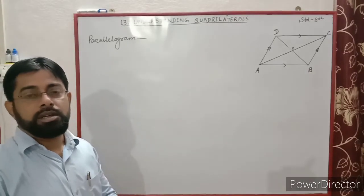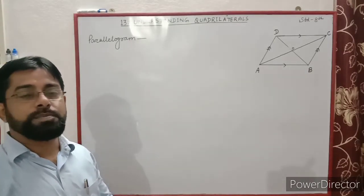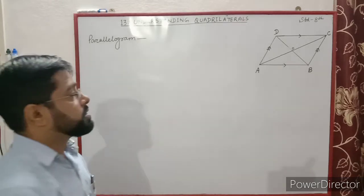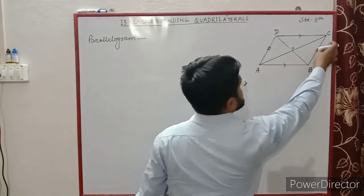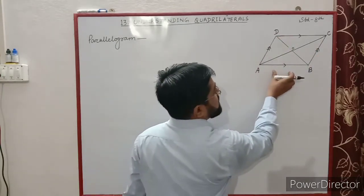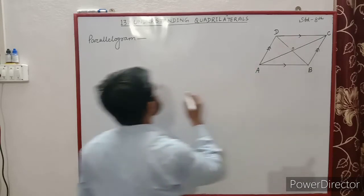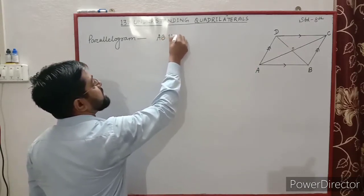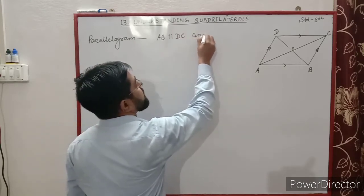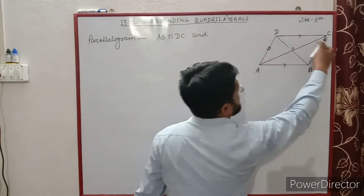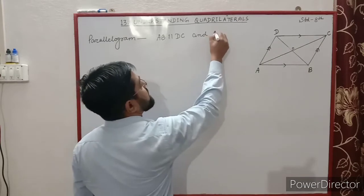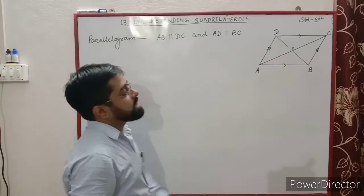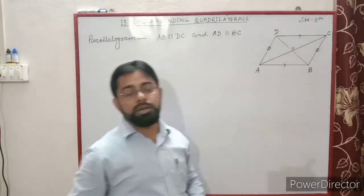Parallelogram. A quadrilateral in which both pairs of opposite sides are parallel is called a parallelogram. From the figure, ABCD is a parallelogram in which AB is parallel to DC and AD is parallel to BC. Both pairs of opposite sides are parallel, so it is called a parallelogram.